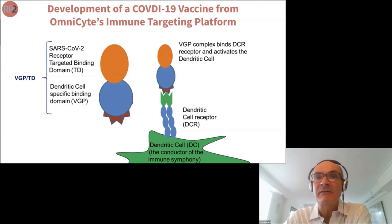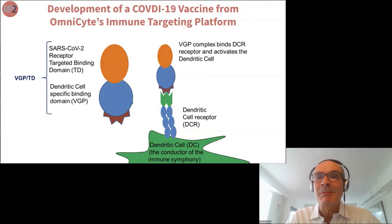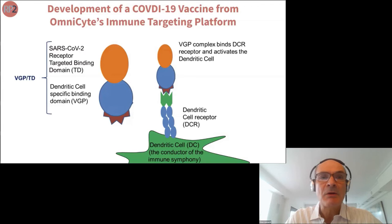Our project was to take our platform technology, which we use to develop therapeutics against cancer, and adapt it to be a COVID-19 vaccine. Our platform protein is made up of two components: a blue domain that binds to immune system cells such as dendritic cells and activates the immune system, and an orange domain that targets the immune response. Previously this platform had a cancer targeting domain; the idea was to replace it with a SARS-CoV-2 targeting domain and activate the immune system toward the COVID-19 producing virus.